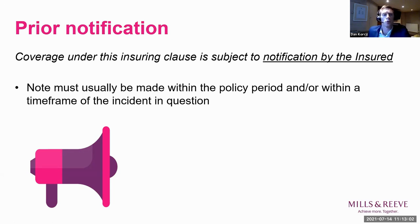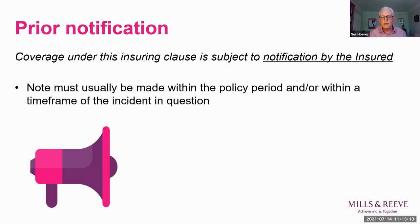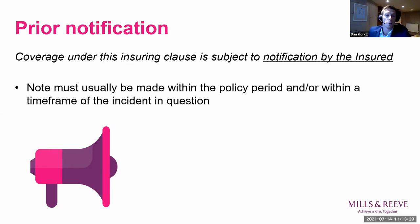In order for the mitigation of loss clause to take effect, it is common for policies to require insurers to be notified of the existence of a potential claim. In a mitigation of loss scenario, we're more likely to be concerned with a circumstance rather than a formal claim, given the involvement is intended to be at an early stage with a view to avoiding a formal claim rather than responding to one. Circumstances can be anything from an initial complaint to discovery of an issue which suggests a claim is going to follow in the future — though this depends on how 'circumstance' is defined in the policy.